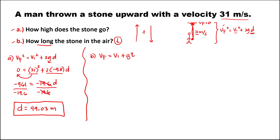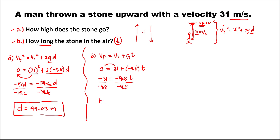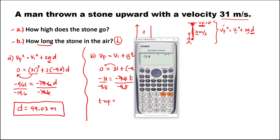To solve for time up, the final velocity at the top is equal to zero. So: 0 equals 31 meters per second plus negative 9.8 times the time. Transposing 31 to the other side gives negative 31 equals negative 9.8 times the time. Dividing both sides by negative 9.8 gives us the time up.